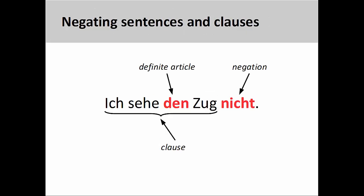Note, however, that we can only negate indefinite nouns in this manner, meaning nouns that are preceded by an indefinite article. Nouns that are preceded by a definite article require the use of nicht at the end of the clause: ich sehe den Zug nicht — I do not see the train.